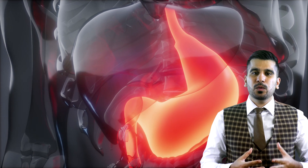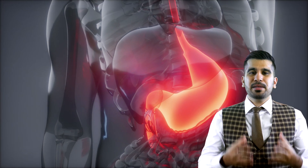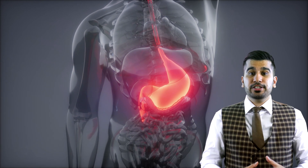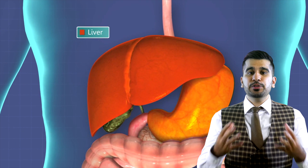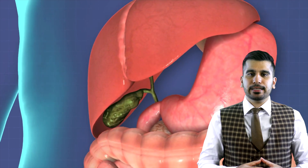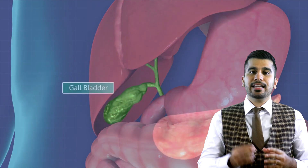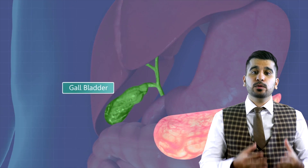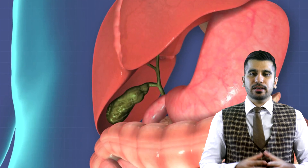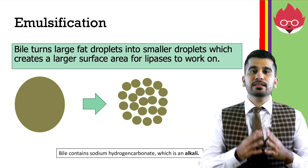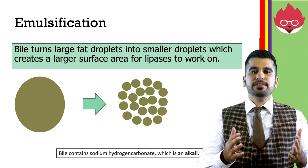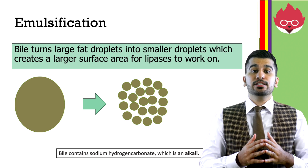The stomach is a muscular organ which churns food, breaking it down. The stomach contains hydrochloric acid and enzymes such as pepsin, which help digest proteins. Bile is an alkaline substance produced by the liver and stored in the gallbladder. Food leaving the stomach is very acidic; however, the enzymes in the small intestine work better in alkaline conditions. Bile therefore neutralizes the acid as it contains sodium hydrogencarbonate. Bile will also emulsify fats, turning large fat droplets into smaller droplets, which creates a large surface area for the enzyme lipase to break down fats.